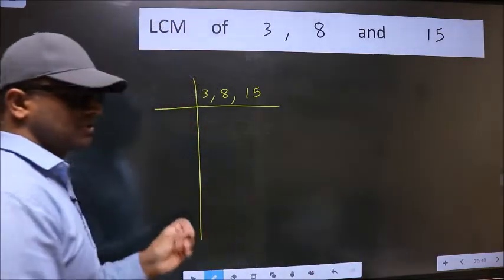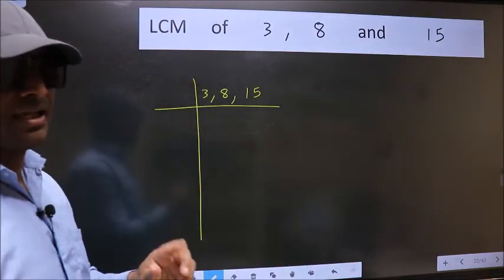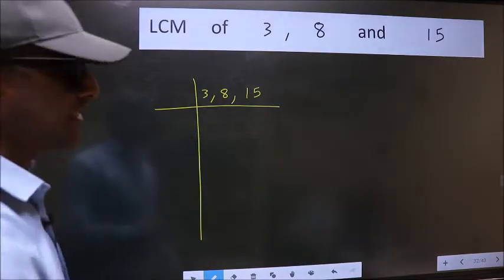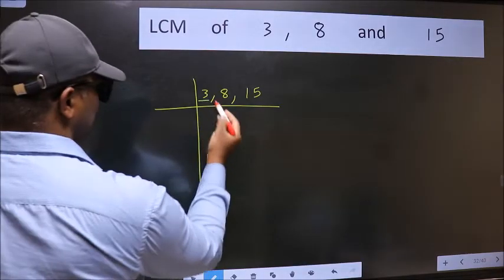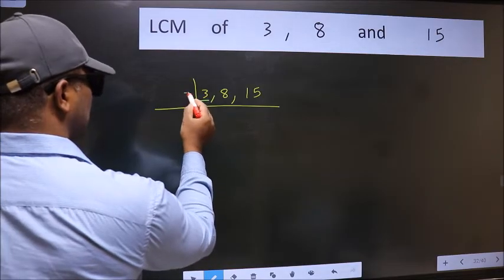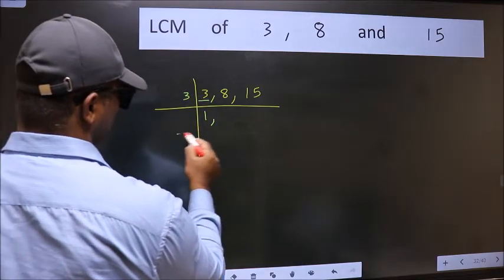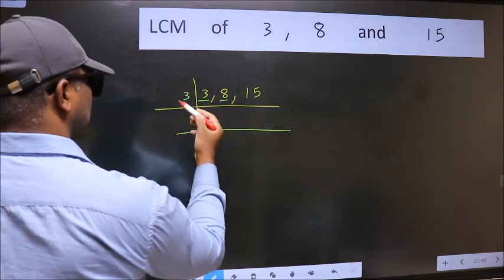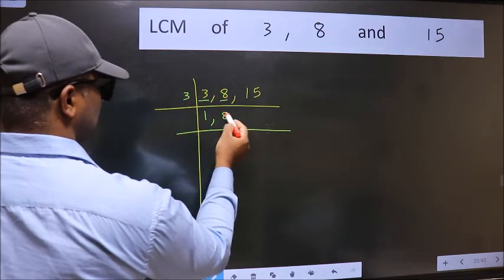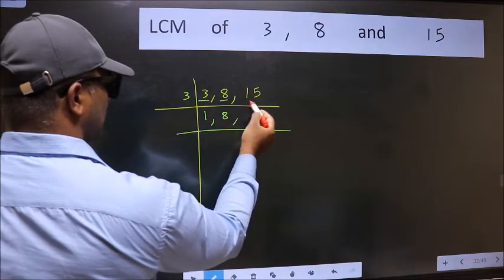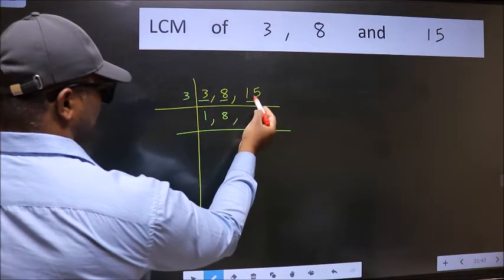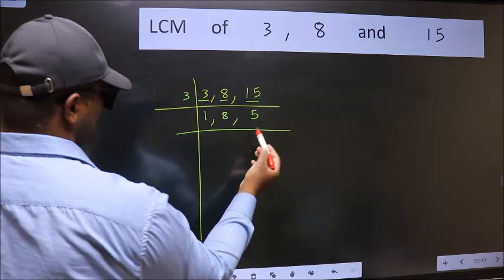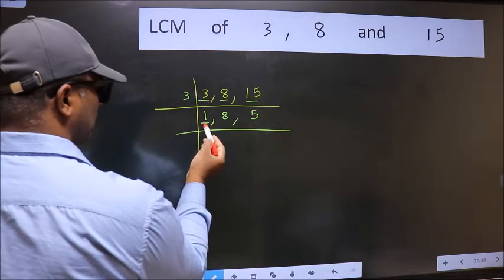This is your step 1. Now we should focus on the first number, which is 3. 3 is a prime number, so 3 divides 3. The other number, 8, is not divisible by 3, so we write it down as it is. The other number, 15 — 3 times 5 is 15 — so 15 becomes 5. Now we got 1 here.